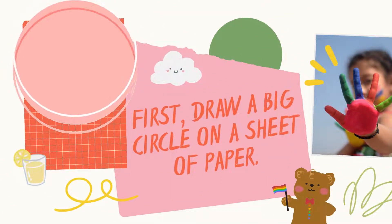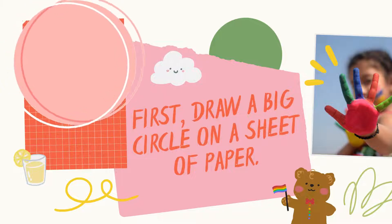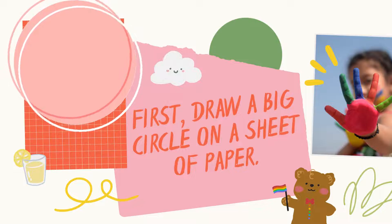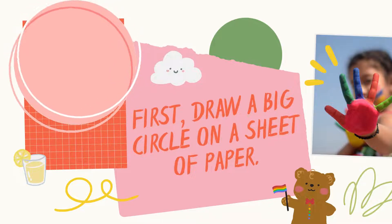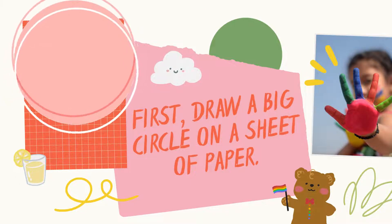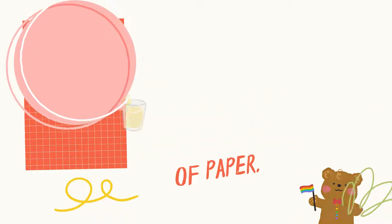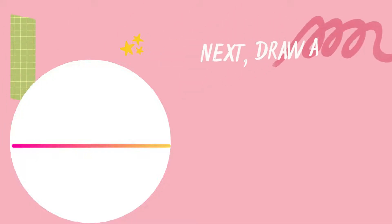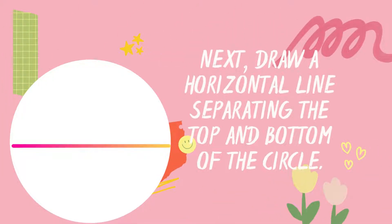So what are we going to do? On your bond paper, draw a big circle. The first thing that we are going to do is draw a big circle on a sheet of paper like this. And then, after drawing a circle, you are going to draw a horizontal line separating the top and bottom of the circle.